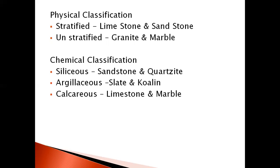The third type is calcareous rock. As the name suggests, these are rocks with a high composition of calcium — calcium oxide (CaO) — which is lime. Limestone and marble are examples of calcareous rock. To summarize the three classifications: geological has igneous, sedimentary, and metamorphic; physical has stratified and unstratified; and chemical has siliceous, argillaceous, and calcareous.